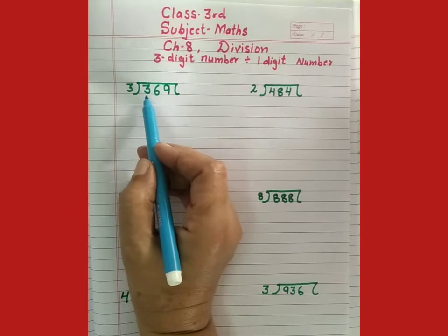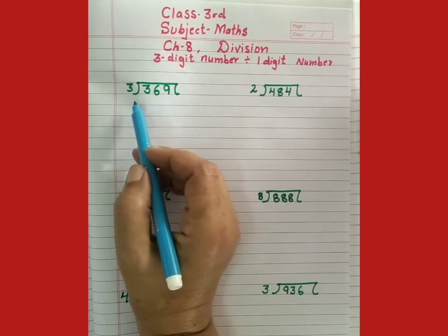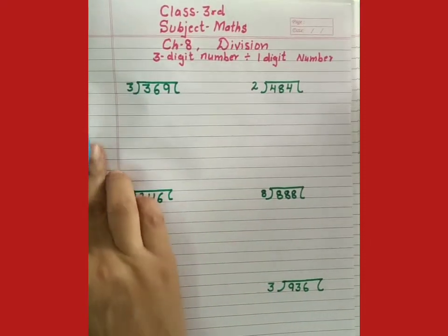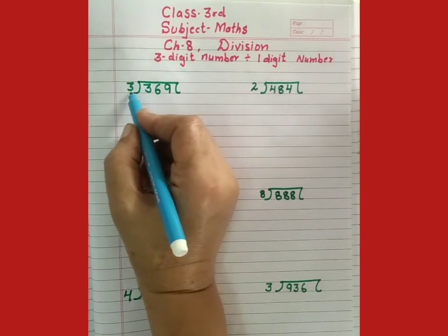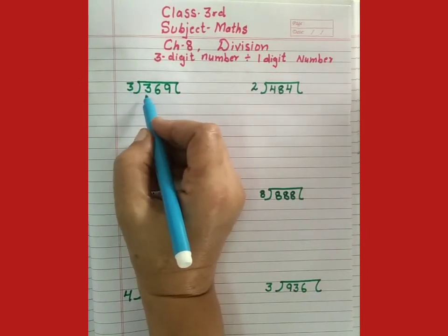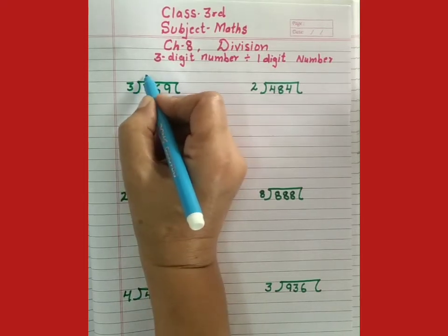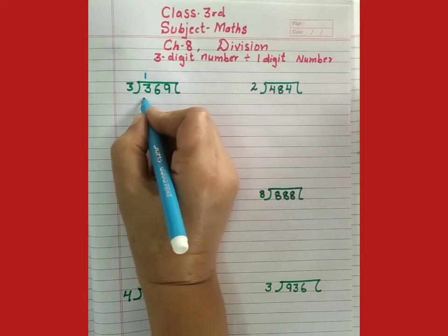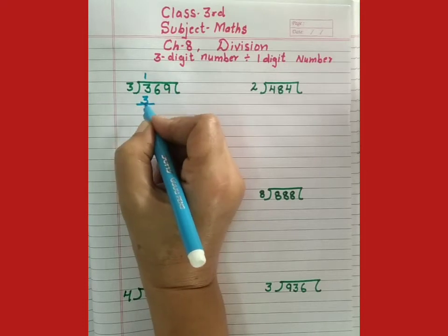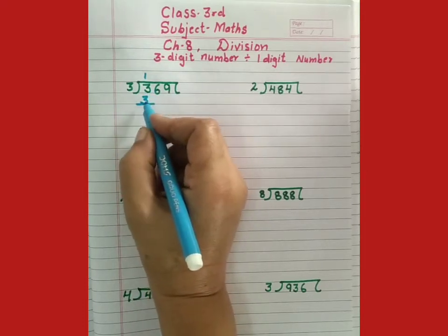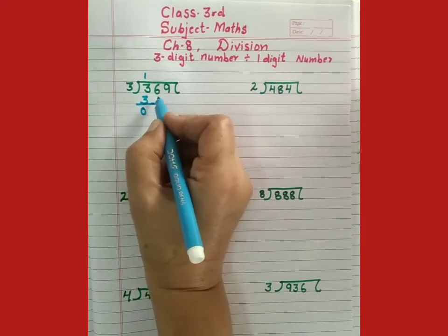Look here, there are 3 digit numbers, 369. We have to divide it by 3. So, this way we will sum 3 step. First of all, we will divide it by 3. First number is 3. 3 becomes 3. 3 subtracting 3 is 0. Now, we will bring down 6.